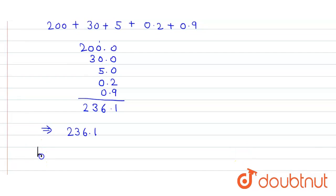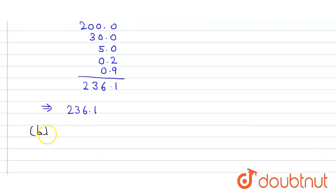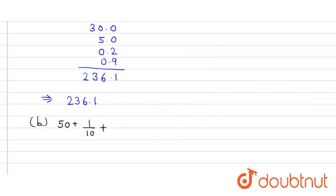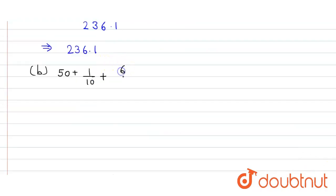Similarly in the second part, here it is 50 plus 1 by 10 plus here it is 6 by 100. So here it can be written as 50 plus 1 by 10 will be 0.1 plus here that will be 0.06 because there are 2 zeros in the denominator.